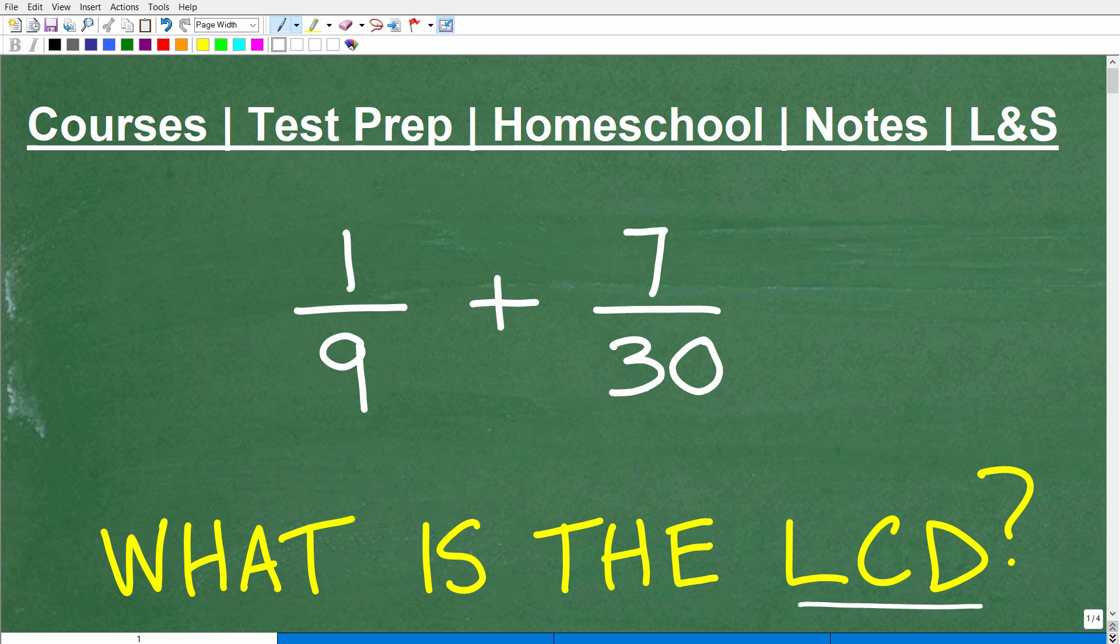A lot of you can look at these two fractions and probably tell me what the LCD is. If you know the answer, put that in the comment section. I'm going to show you the answer here in one second. But what if I gave you these fractions: 3 over 1408 plus 2 over 176? This would be much more challenging.